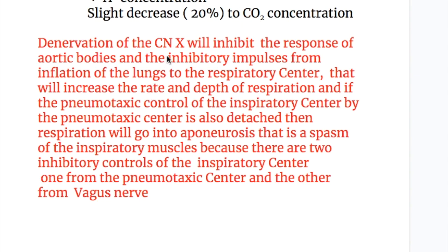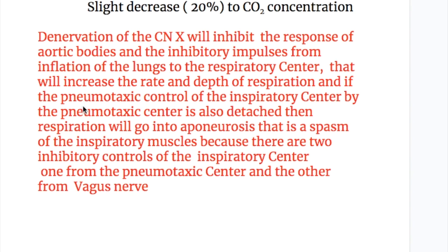Denervation of the vagus nerve will inhibit the response of the aortic bodies and the inhibitory impulses from lung inflation to the respiratory center. This increases the depth of respiration, and if the pneumotaxic center's connection to the inspiratory center is also removed, respiration will go into apneosis. There are two inhibitory controls of the inspiratory center — one from the pneumotaxic center and one from the vagus nerve — and if both are eliminated, apneosis occurs.